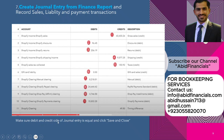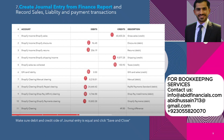Make sure the debit and credit sides of the journal entry are equal. After that, click Save and Close. Your Shopify sales are now recorded in QuickBooks Online. You may run the Profit and Loss report from the Reports section to see your latest journal entry for the given period.